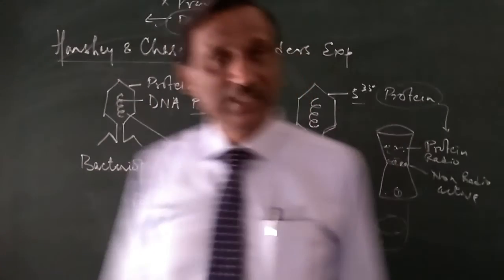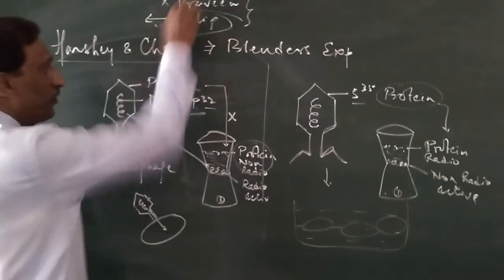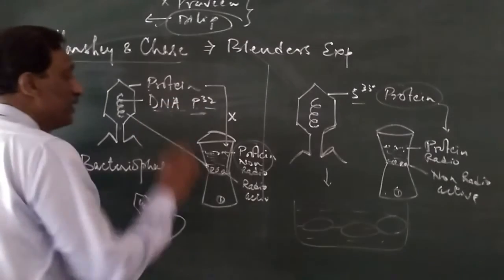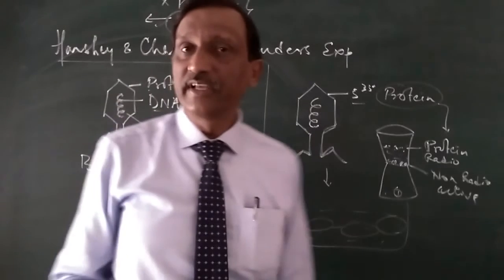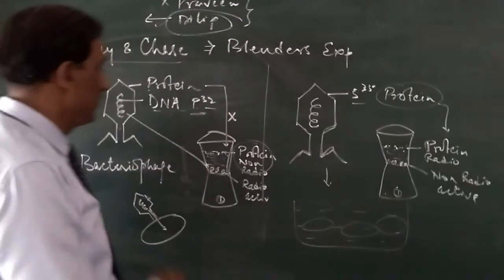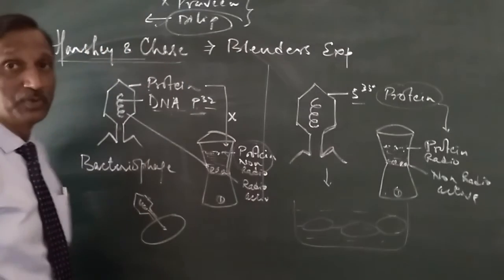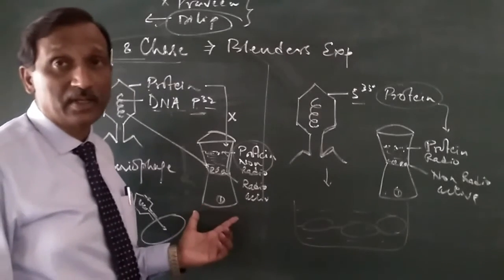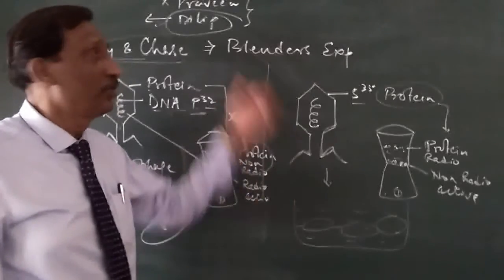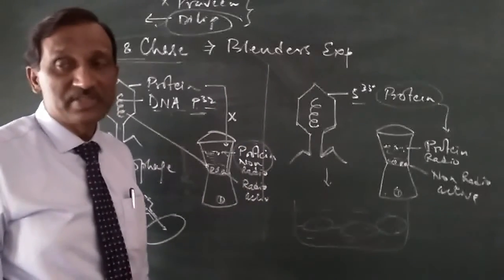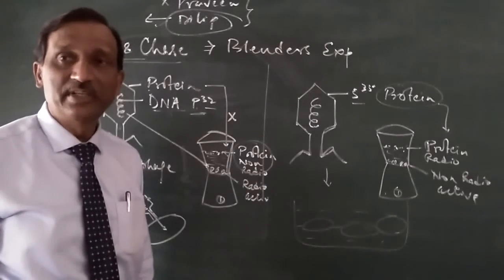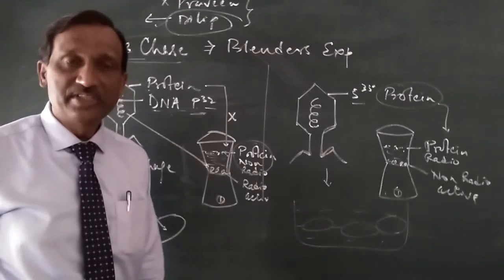Similarly, the protein (Praveen) did not enter — only the DNA (Dilip) entered the bacteria. The multiplication of the virus is a genetic character, and this genetic character is controlled by DNA, not protein. Hence we can say that DNA is the genetic material. This was proved by Hershey and Chase. It is called the blender experiment because at that time centrifugation machines were not available, so they used a blender. Using radioactive labeling, they confirmed that DNA is the genetic material.